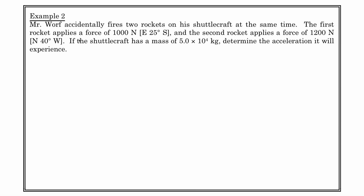Mr. Worf on the Starship Enterprise accidentally fires two rockets on his shuttlecraft at the same time. The first rocket applies a force of 1,000 newtons east, 25 degrees south. The second rocket applies a force of 1,200 newtons north, 40 degrees west. If the shuttlecraft has a mass of 5.0 × 10⁴ kilograms, determine the acceleration it will experience. The first force is 1,000 newtons east 25 degrees south, and the second is 1,200 newtons north 40 degrees west.